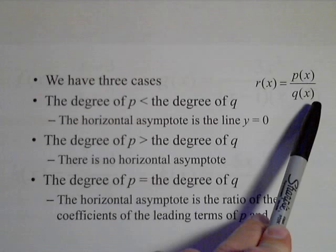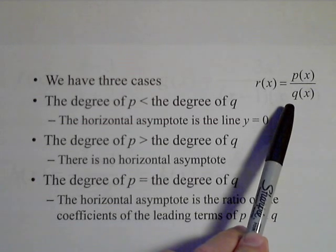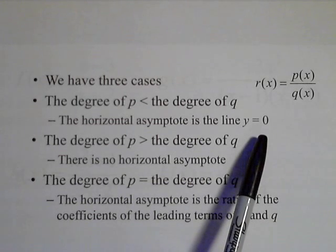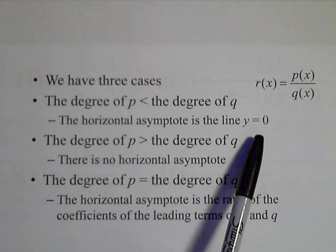imagine having a fraction with a huge denominator. It's really close to zero. So if the degree is bigger in the denominator, the horizontal asymptote is automatically the line y equals zero.